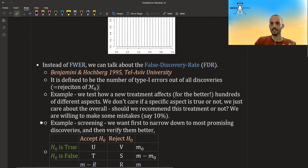So in that case, if it's overall improving, then we should recommend this new treatment. If not, then we should not recommend it. So we are willing to make some mistakes, say 10% or 5%, because we don't care about the individual discovery. We just care about the overall results.